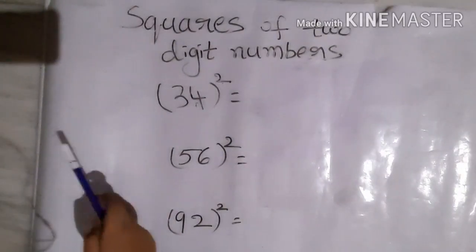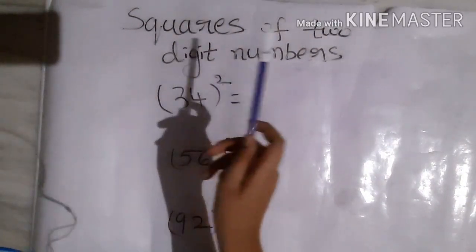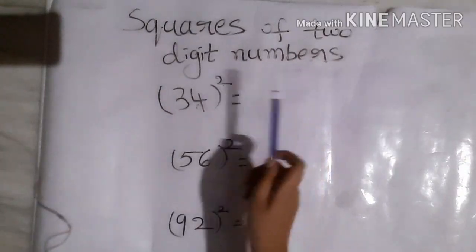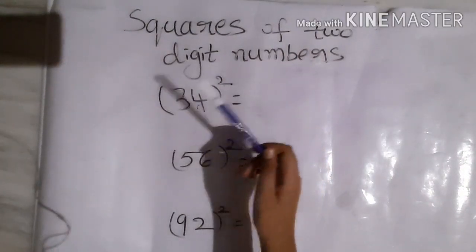Hi everybody, now let's discuss squares of two-digit numbers. First problem: 34 squared.